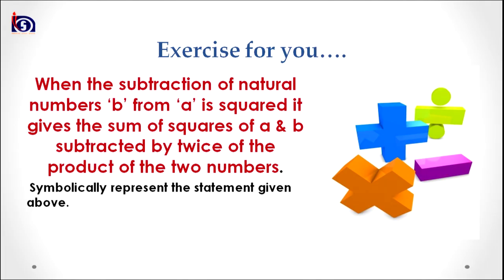Now there is an exercise for you. You are required to think: when the subtraction of natural number b from a is squared, it gives the sum of squares of a and b subtracted by twice the product of the two numbers. You are required to symbolically represent this statement as a mathematical expression.